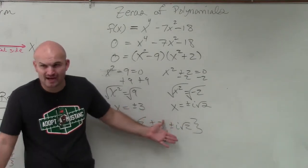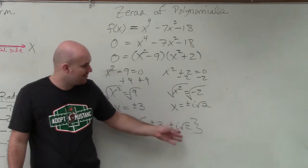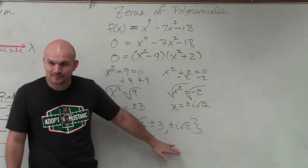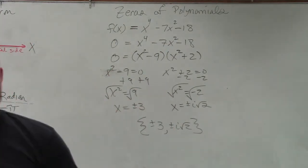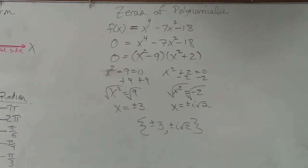Those are my two imaginary solutions. So they don't actually represent x-intercepts. Does that make sense? But I still have four solutions. It still follows that point. Now, I have two things to go through.